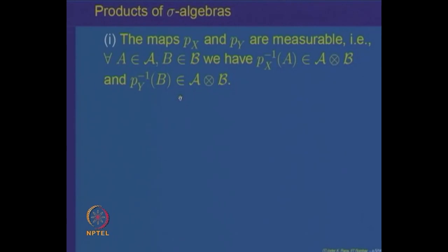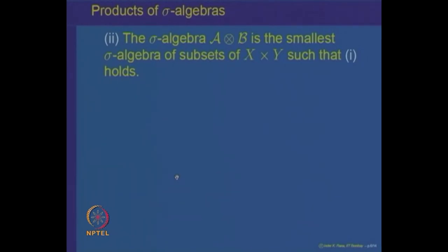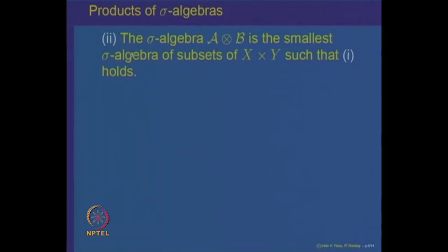Something more can be said: one can show that A⊗B on X×Y is the smallest sigma algebra of subsets of X×Y such that P_X and P_Y are both measurable. If A belongs to A and B belongs to B, then P_X⁻¹(A) = A×Y is a rectangle and P_Y⁻¹(B) is again a rectangle; both belong to the product sigma algebra, hence P_X and P_Y are measurable. The product sigma algebra A⊗B is the smallest sigma algebra with this property.